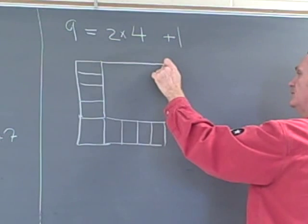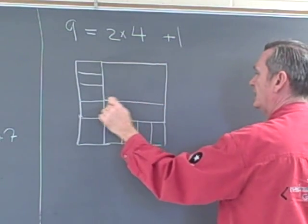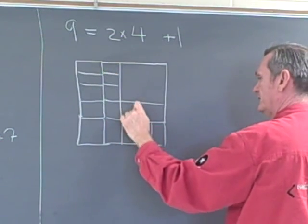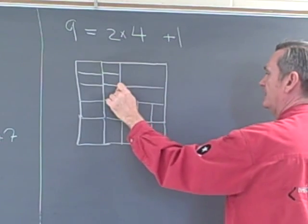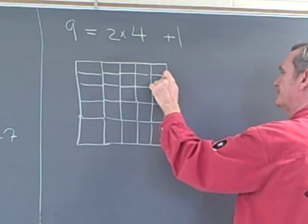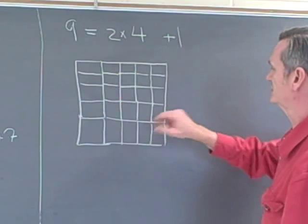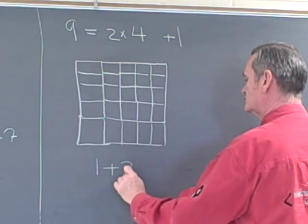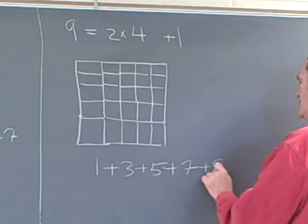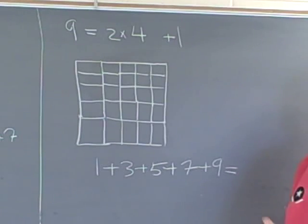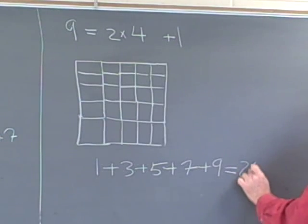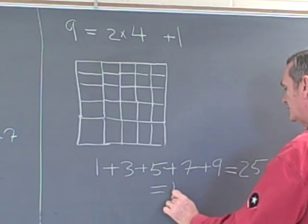From what we just did, we have that seven plus five plus three plus one was equal to 16. So here we get one plus three plus five plus seven plus nine is equal to — counting five groups — five by five, so that's 25, and that's five times five.